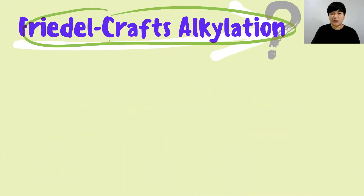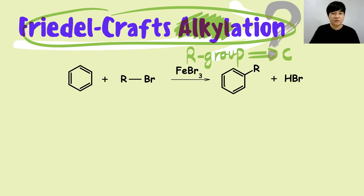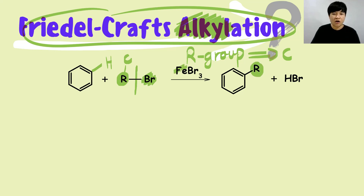Next is Friedel-Crafts alkylation. Alkylation means your R group, which is also your carbon or alkyl group, will substitute the hydrogen. We focus on the hydrogen in the benzene ring and on the R group attached to the halogen — that carbon-halogen bond will break, and the R group substitutes the hydrogen in the presence of a catalyst.